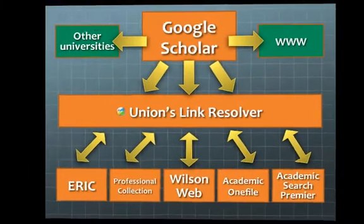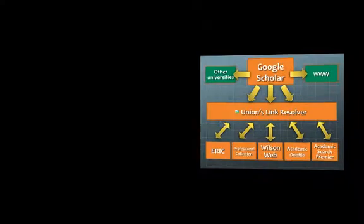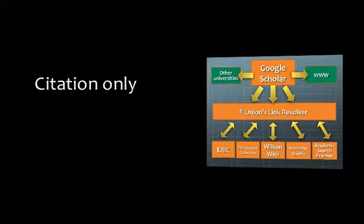Remember, there are two levels of availability. One level is citation only, where you simply get the parts of a reference entry — the author's names, the year, the title, the journal — but it doesn't actually have the article. The other level of availability would be the full text, either the HTML version, which would be the less preferred option, or the PDF version, which would be the preferred option.